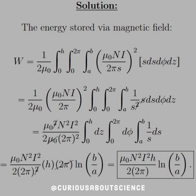Since we know what the field is, let's go ahead and square it and find what the integral over all space is. Clearly, with this being a square-loop toroid, what we're going to do is take 0 to H for the height, 0 to 2π for phi, and then A to B for inner to outer radius. It's a square cross-section, so we have cylindrical coordinates: s ds dφ dz, and now we're ready to go.